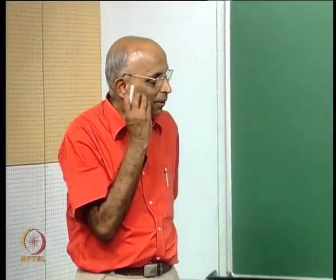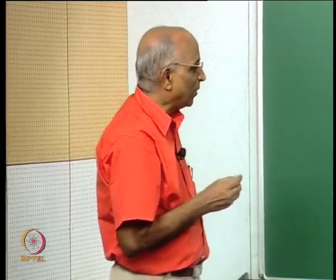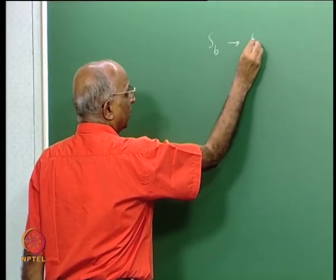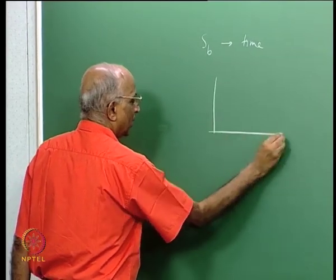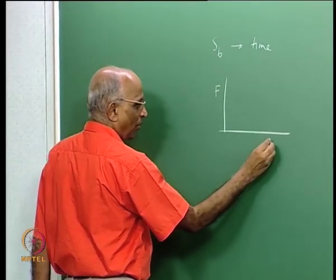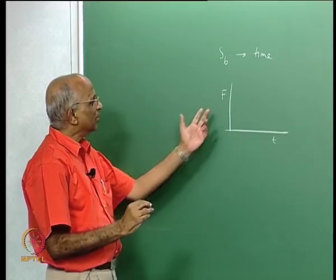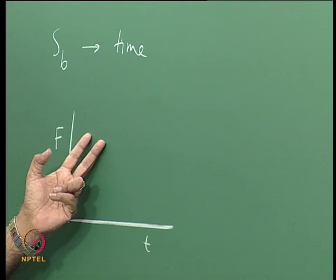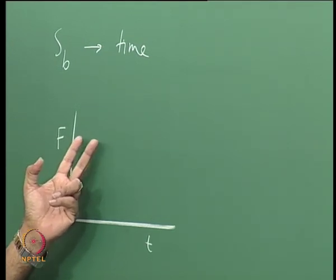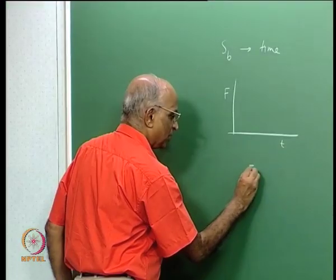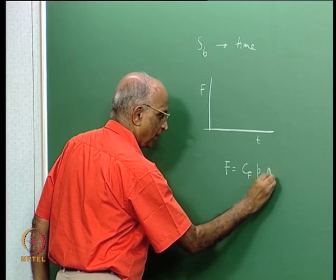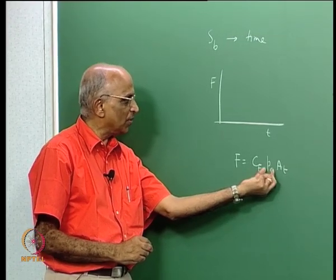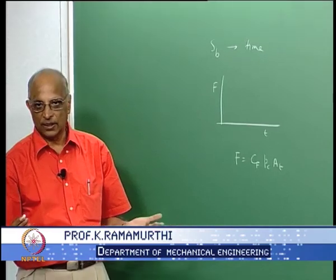Good afternoon. We will continue with solid propellant rockets. We have seen how the burning surface area can be calculated to evolve with time. Therefore, I can now determine how the thrust of a solid propellant rocket will change with time. Once you know the burning surface area, you can calculate the equilibrium pressure, and equilibrium pressure times thrust coefficient times throat area — F = Cf × Pc × At — gives the thrust. We also calculated the equilibrium pressure based on the burning surface area in the last but one class.